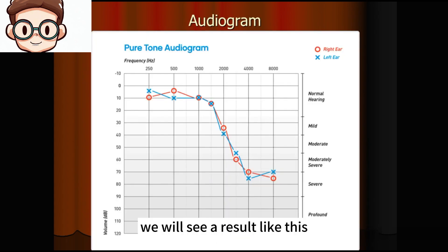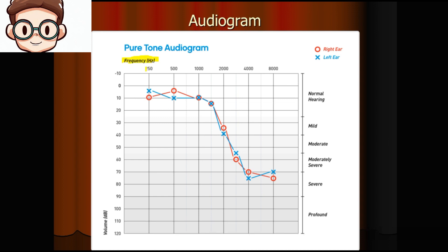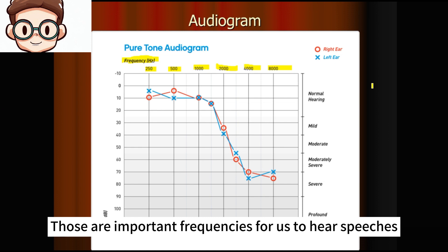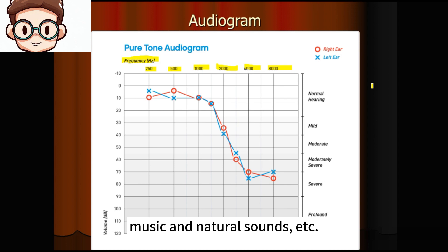Eventually, we will see a result like this. The x-axis is the frequency in Hertz: 250, 500, 1000, 2000, 4000, and 8000. Those are important frequencies for us to hear speech, music, and natural sounds.